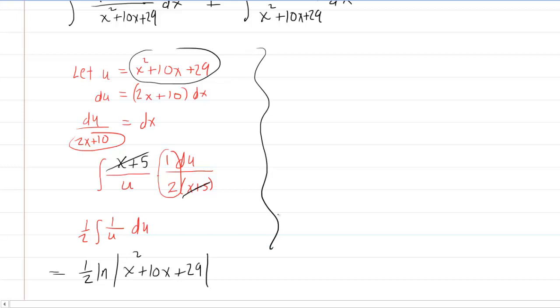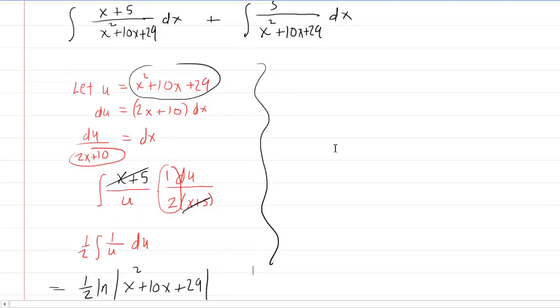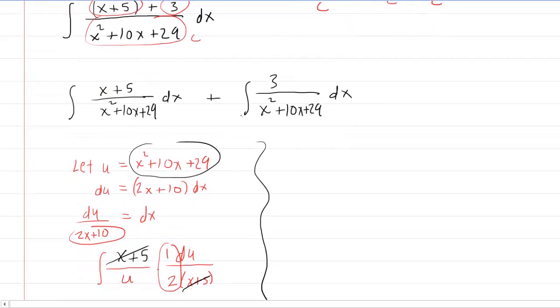Now we have to evaluate the other integral. And then when we're done, we can just add these back together. So the other integral was this 3 over that denominator. And it turns out that we're going to need to complete the square in order to figure out this integral.